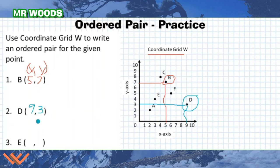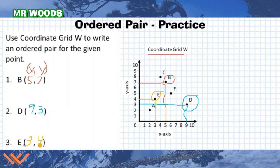Now we need to find point E. Point E is right here. I'm going to draw that line down to the axis and over to the y-axis. Let's count over: 1, 2, 3. And then going up on the y-axis: 1, 2, 3, 4. So point E is at (3, 4). See how we can find all of these points using the number lines on the horizontal and y-axis to find that coordinate pair.